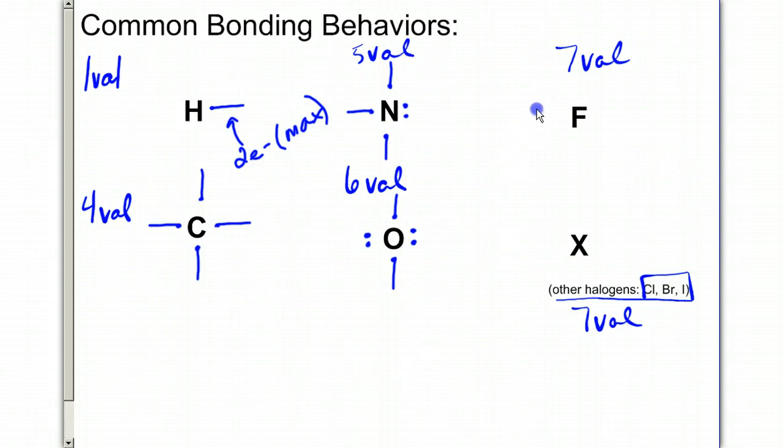Fluorine has 7 valence electrons. With those 7 valence electrons, you'll notice it has 3 pairs. Here's a pair, there's a pair, there's a pair. Here's the single electron. It's going to form one bond with that single electron. Fluorine will only ever have this scenario. You can only ever have one bond with fluorine.